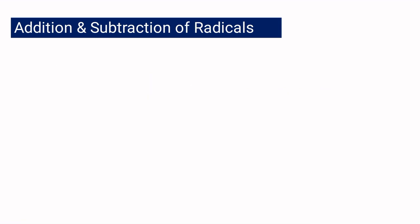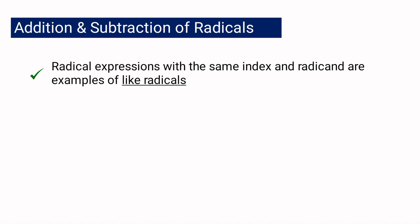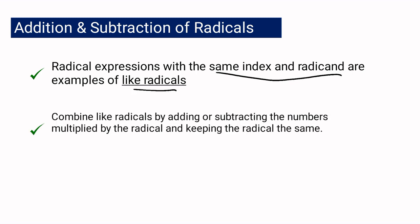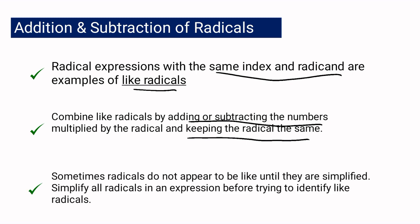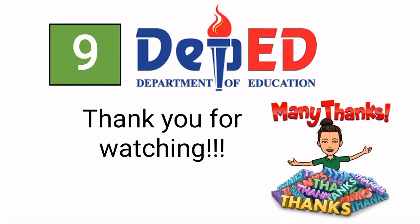Again, in adding and subtracting radicals, you have to determine which are like radicals — expressions with the same index and the same radicand. To combine like radicals, you just add or subtract the numerical coefficients and then affix the common radical. Lastly, remember that sometimes radicals do not appear to be like, so you have to simplify them first before identifying whether they are like or unlike radicals. That is how you add or subtract radicals. This is Momshila again — thank you for watching.